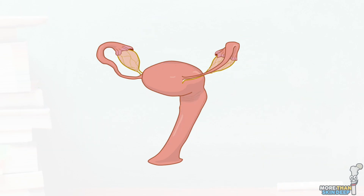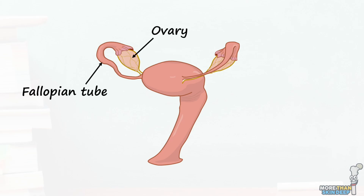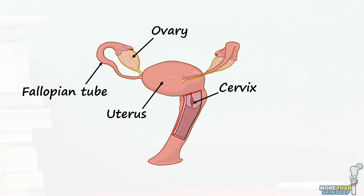That's a lot of anatomy, but I hope it's been useful. In summary, the internal female reproductive system is composed of five key parts: the ovaries, which produce the eggs; the fallopian tubes, which carry these eggs and facilitate fertilisation; the uterus, in which the fertilised embryo will embed and grow; the cervix, which protects the uterus from the outside world; and the vagina, which facilitates sexual intercourse.